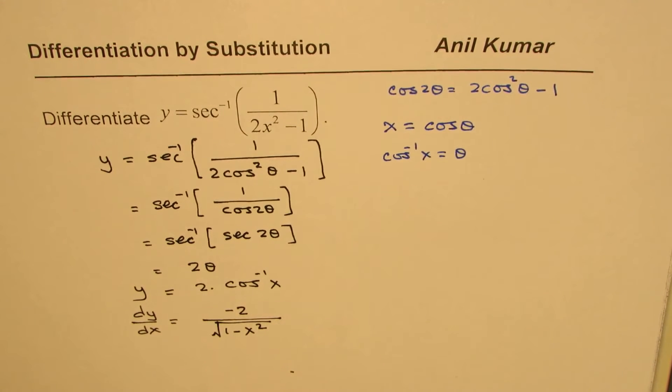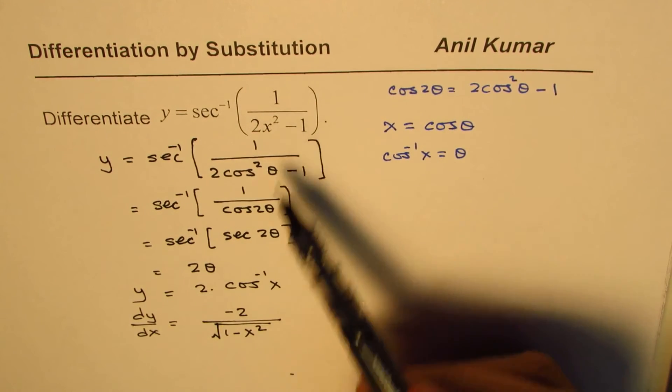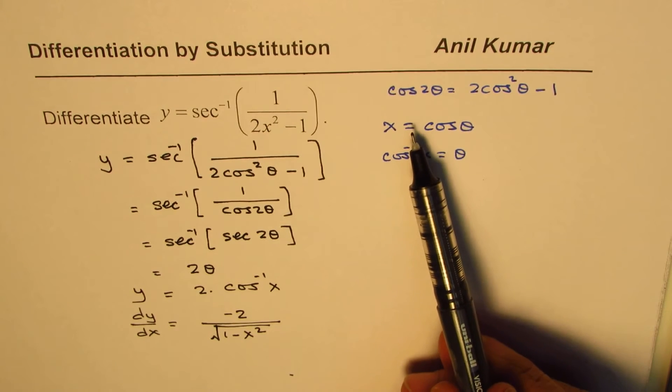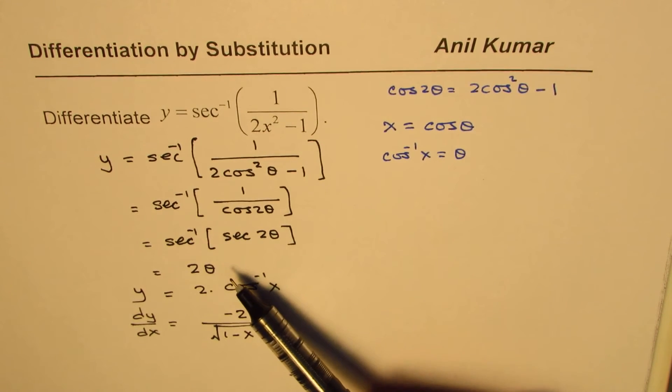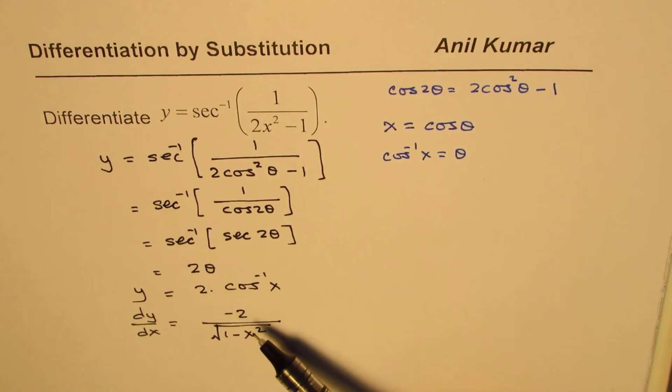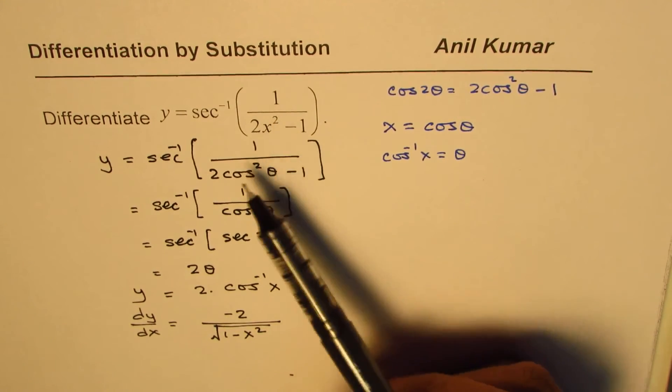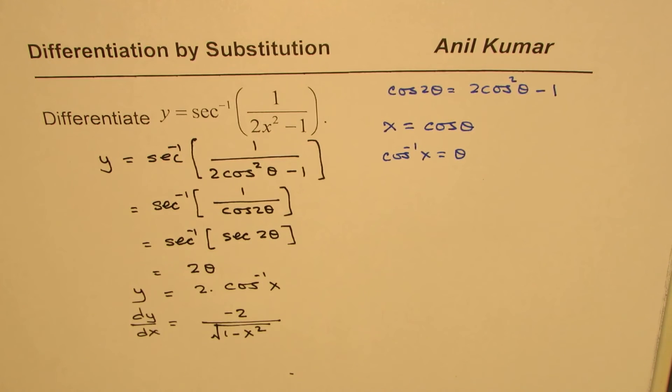So, that becomes the answer for this particular question. It's kind of important to understand what kind of substitution should be done so that we could simplify and get the answer quickly. So, whenever we have secant, we have to get secant insight. That is how our thinking should work.